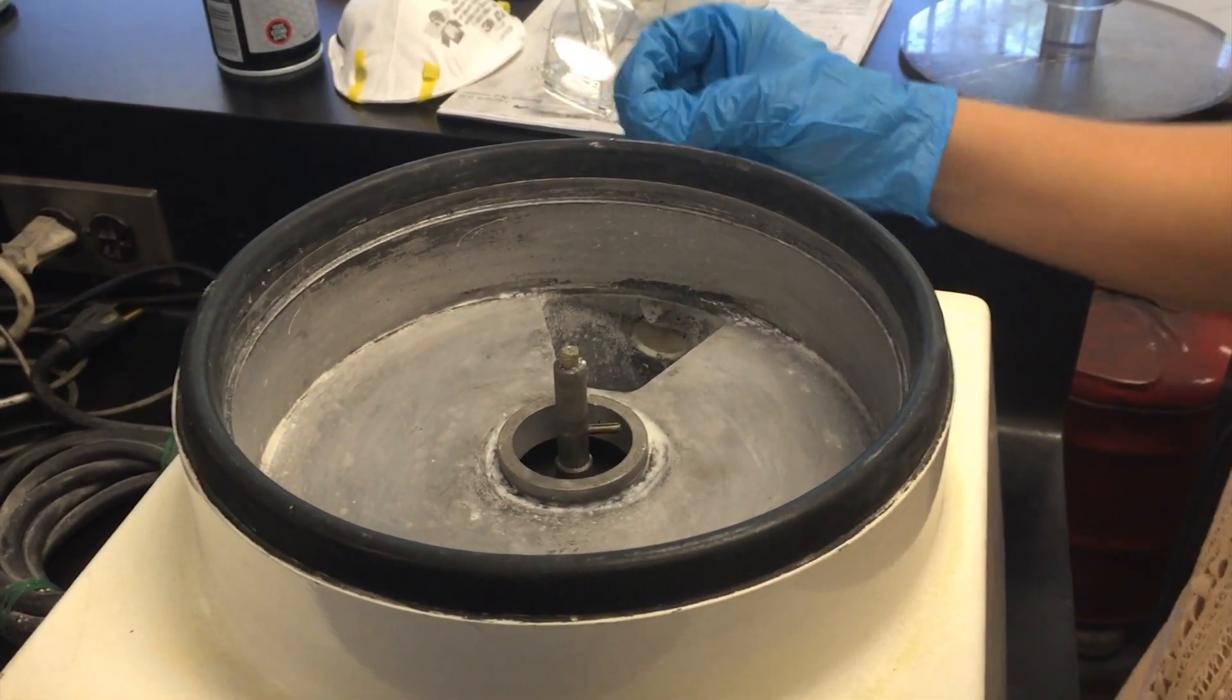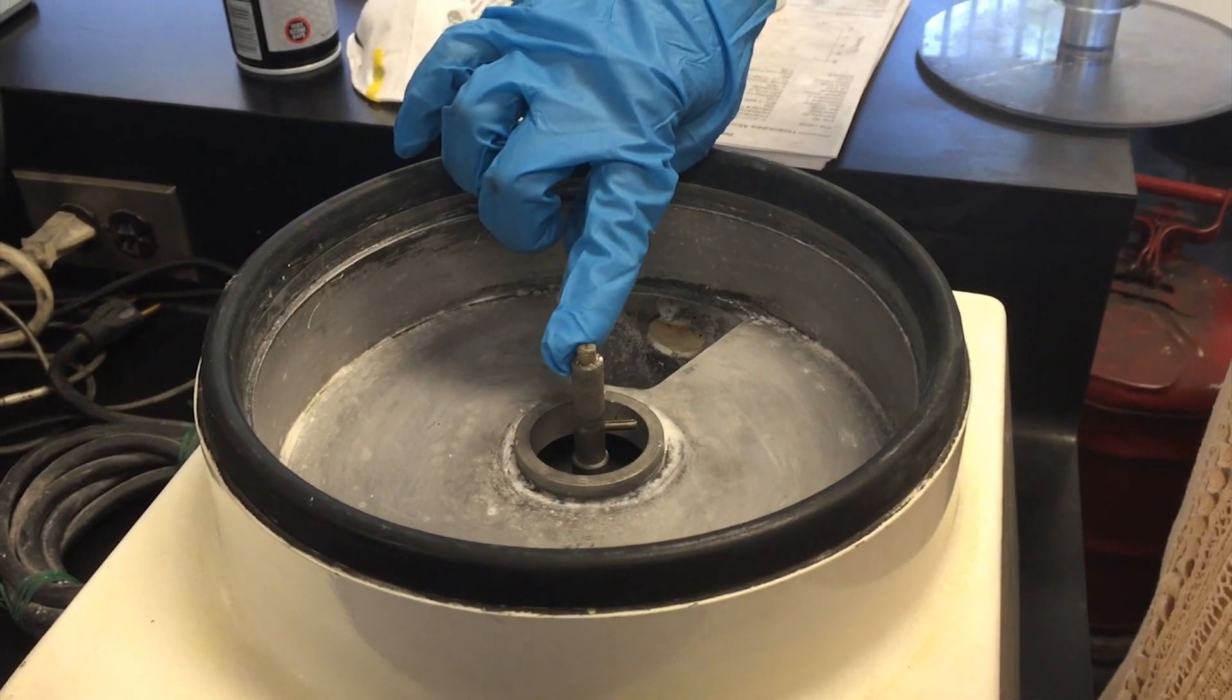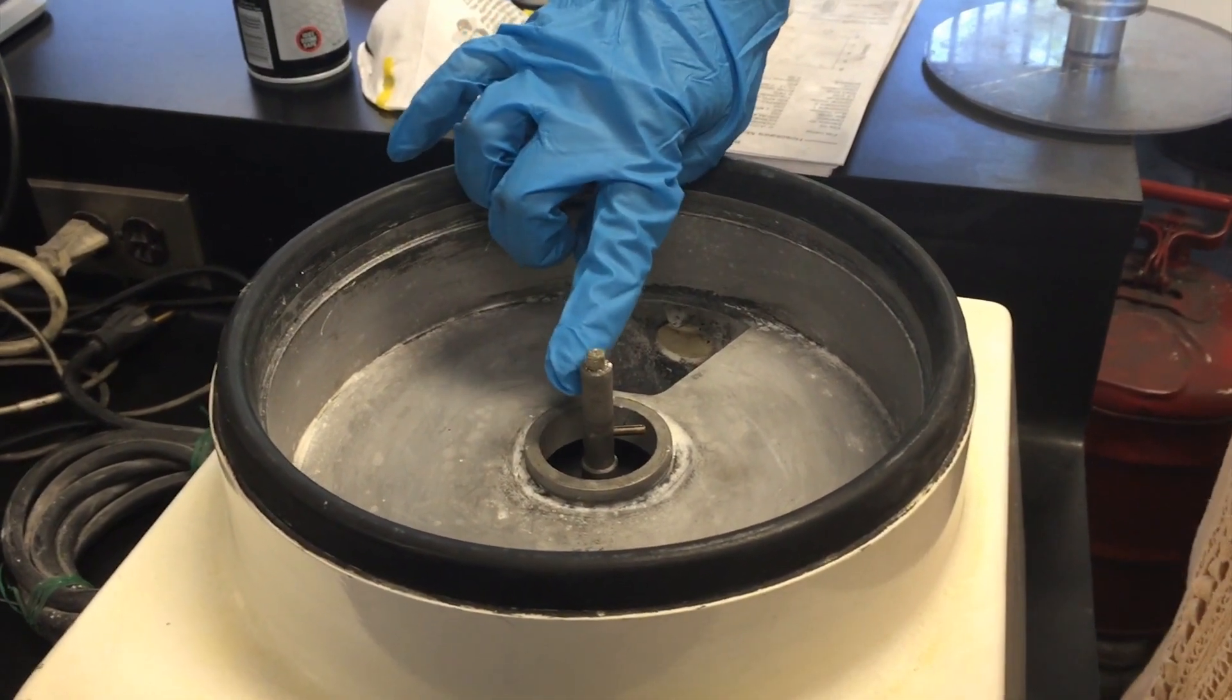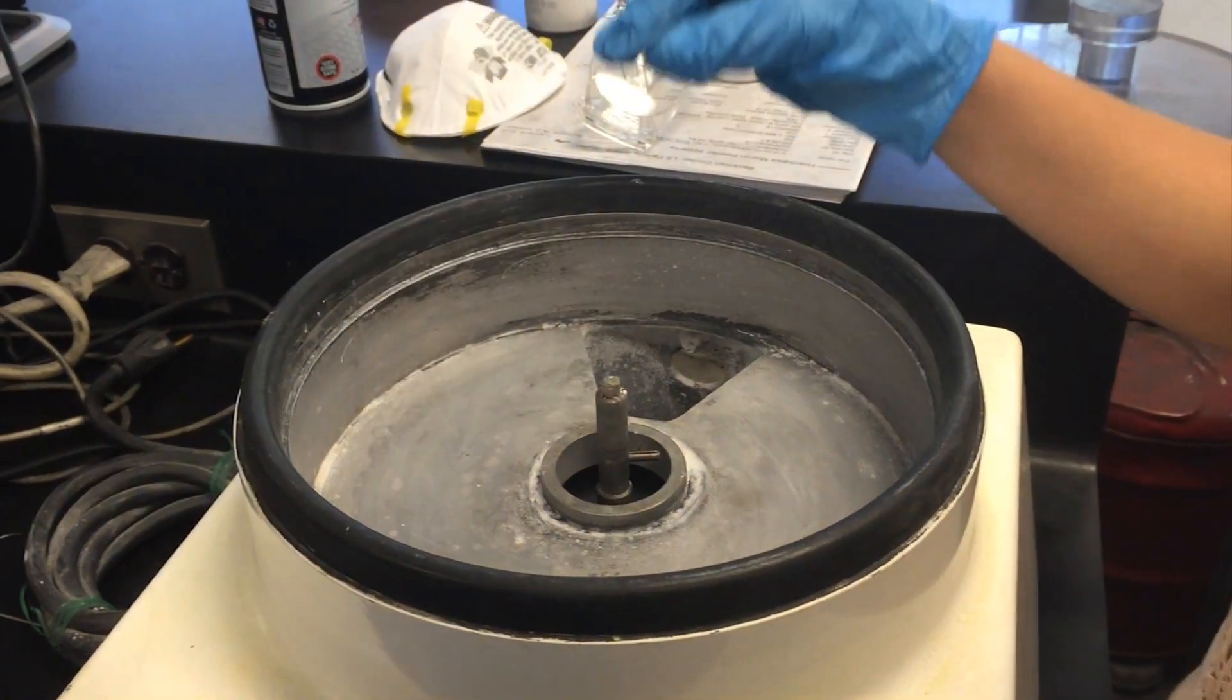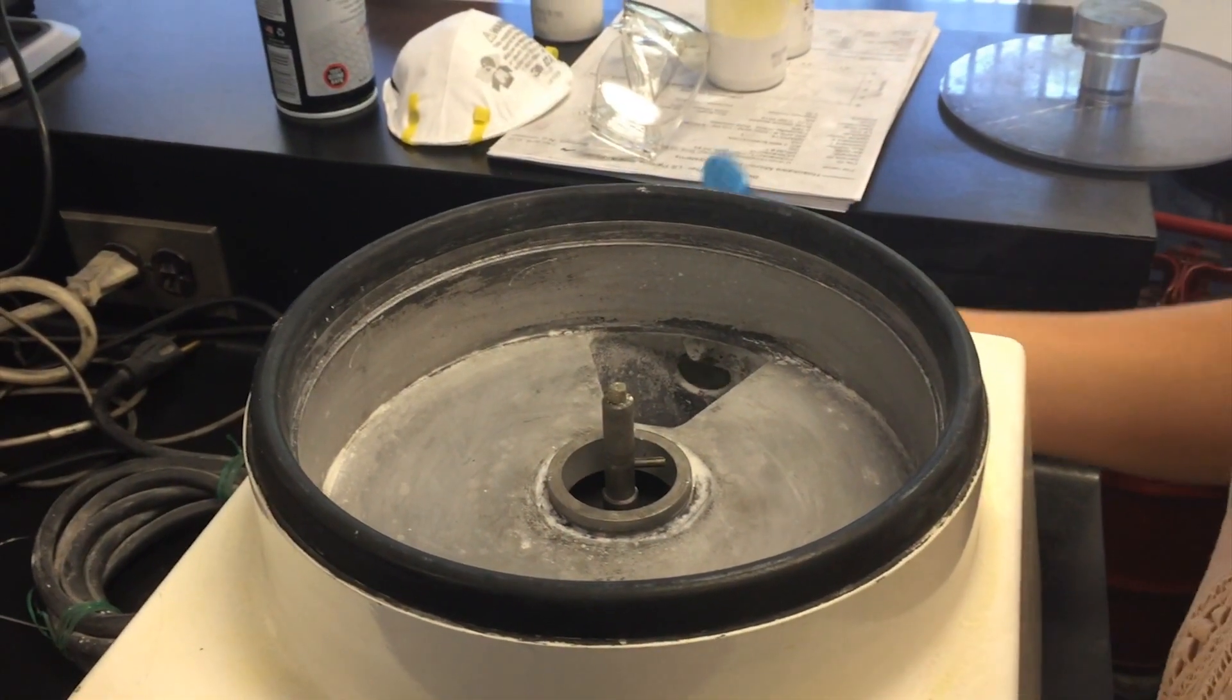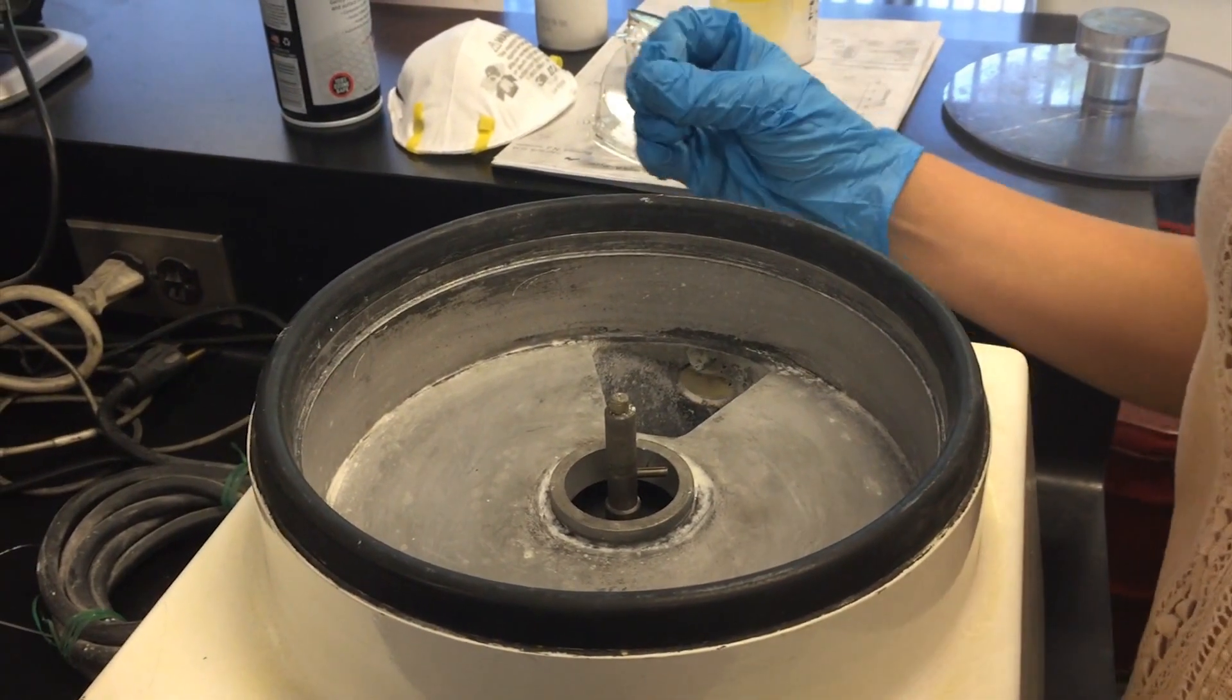Next, we're going to double check the height of the nylon screw that's located on top of the motor shaft. This is going to make sure that it gives the wand proper height and distance between the mesh and the air wand itself.